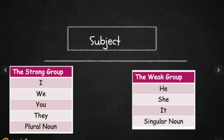First, we will divide the subject into two different groups. This will help make it easier for you to conjugate correctly. The first group is the strong group. It includes I, we, you, they, or a plural noun.